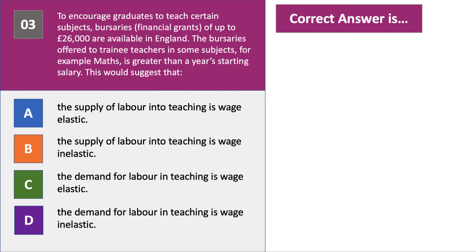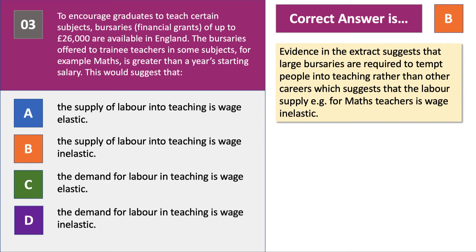They're having to offer big bursaries in excess of one year's starting salary to get people to become a maths teacher. What does that suggest? It suggests the answer is B — the evidence indicates that large bursaries and generous financial assistance are needed to tempt people into teaching rather than alternative careers. That suggests the labour supply into teaching is wage inelastic, particularly in shortage subjects.